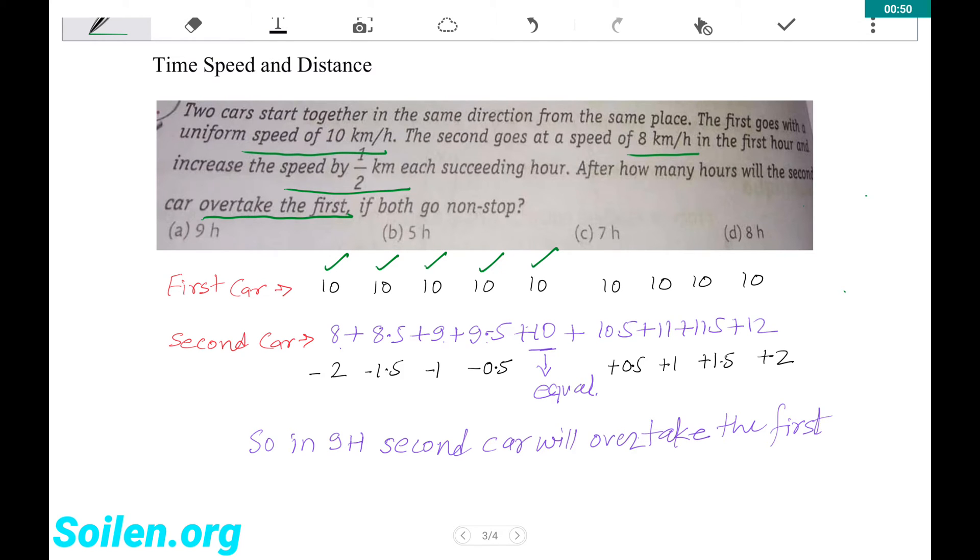Second car starts with 8 km per hour and then increases speed by half km each hour. It means in the 2nd hour it will cover 8.5, then 9, 9.5, 10 - here both become equal. And after this 10.5, 11, 11.5, 12.